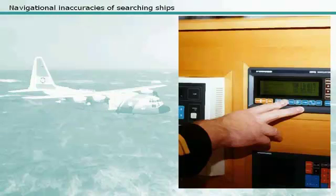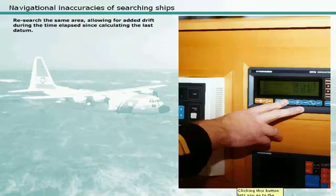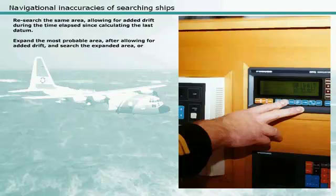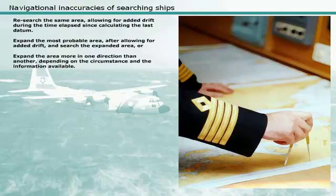Navigational inaccuracies of searching ships are most likely to apply when navigational fixes cannot be obtained. In this situation, the on-scene coordinator may re-search the same area, allowing for added drift during the time elapsed since calculating the last datum. Other options include expanding the most probable area after allowing for added drift and searching the expanded area, or expanding the area more in one direction than another, depending on the circumstances and the information available.